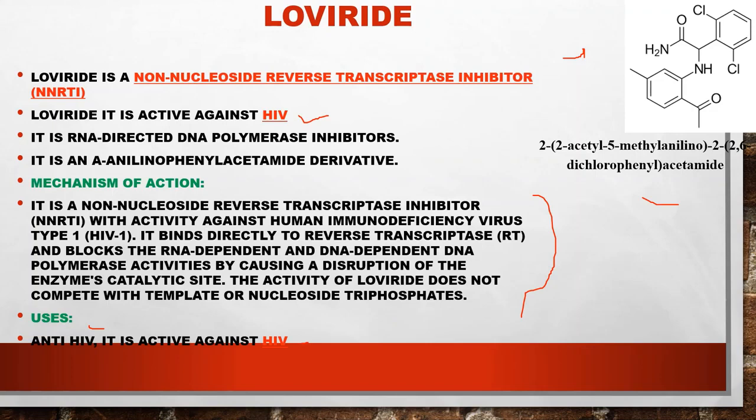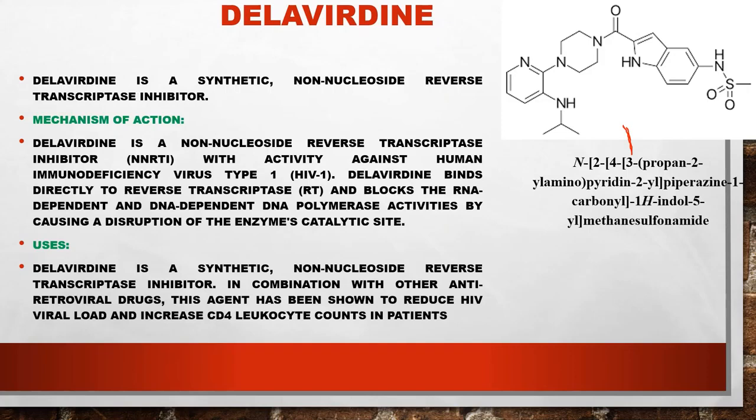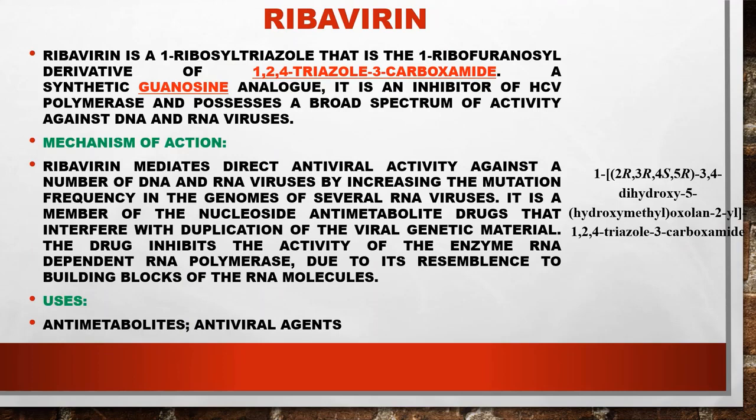The next drug is delaviridine. Looking at its structure — remember, you will be asked about structure and uses. Delaviridine is also an anti-HIV drug that inhibits reverse transcriptase, blocking DNA-dependent and RNA-dependent polymerase activity and causing disruption of the enzyme, preventing DNA replication.